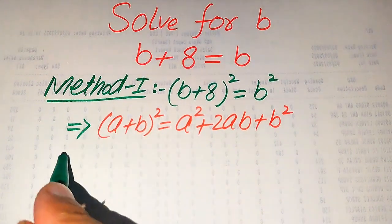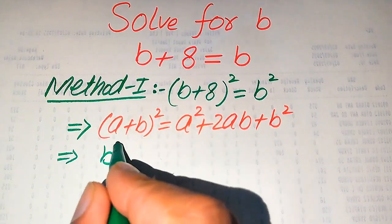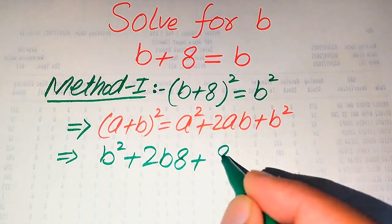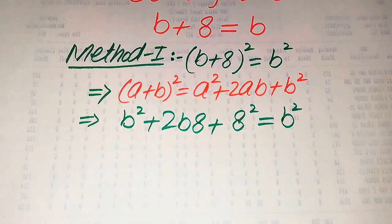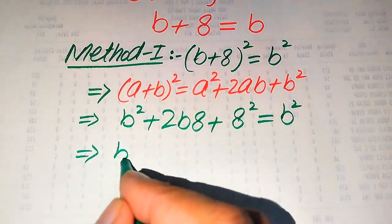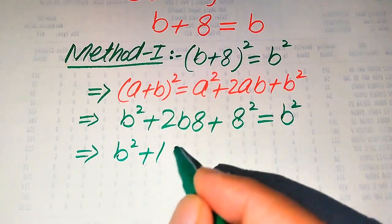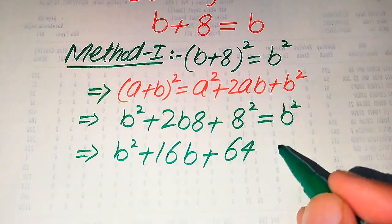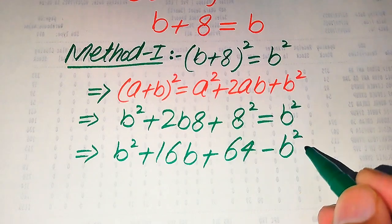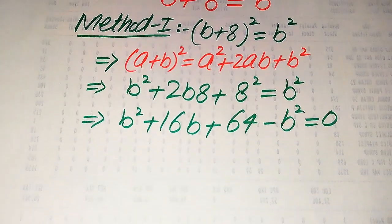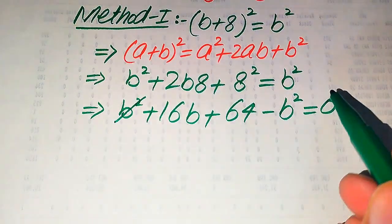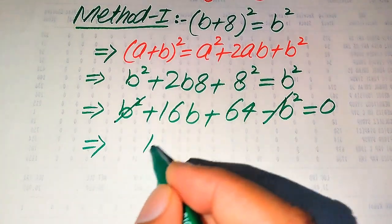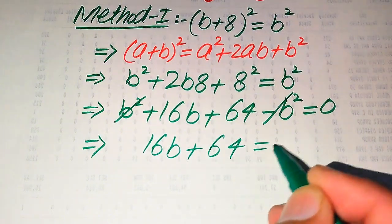On the left hand side we apply this algebraic formula, so we write the left hand side as B² + 2·B·8 + 8², and this whole equation equals B². In the next step we have B² + B² + 2 times 8 which becomes 16B, plus 8² equals 64. In the next step we move this B² from the right hand side to the left hand side and it becomes minus B², so the whole equation equals 0. This positive B² and negative B² cancel out, and we get 16B + 64 = 0.